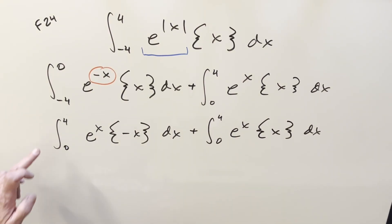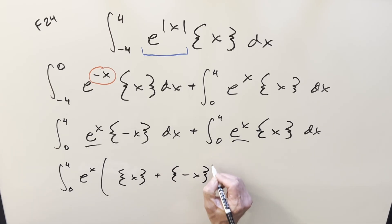Now with the same bounds, we'll bring them together, create one integral. We've got e to the x in common. So we're going from 0 to 4, factor out the e to the x, and create something in parentheses. We'll do fractional part of x plus fractional part of minus x, dx.